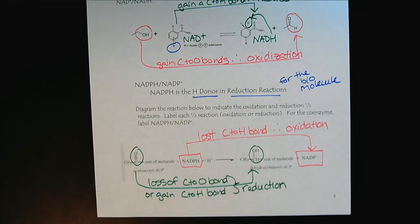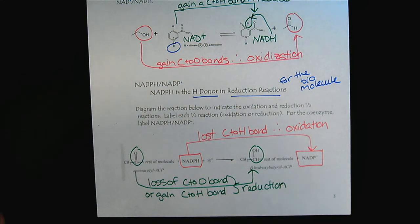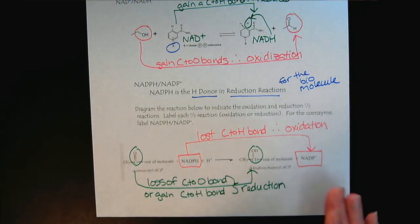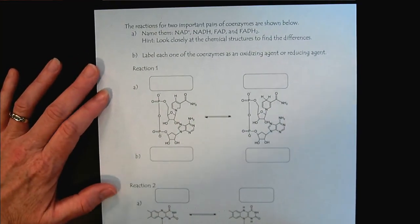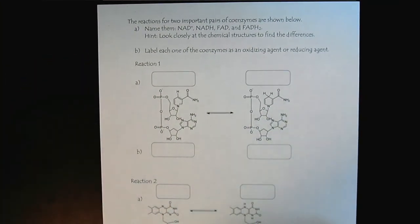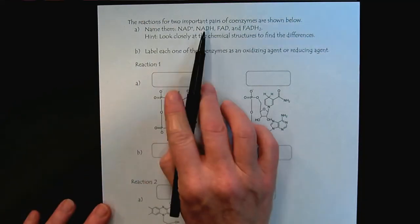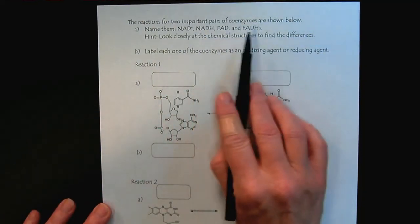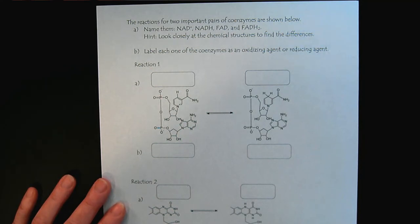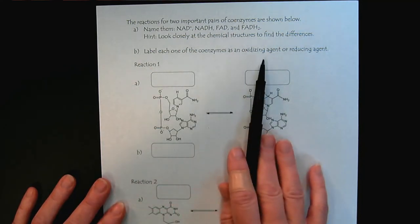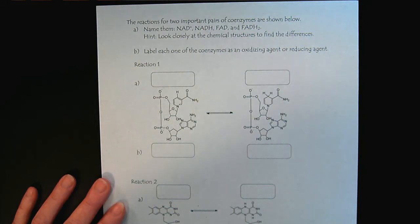So there are the three main coenzymes. Now to wrap this up: on a fresh sheet of paper, let's see how well you're doing. Can you distinguish between NAD+, NADH, FAD, and FADH2? Look closely at the chemical structures to find the differences, then label each coenzyme as an oxidizing agent or a reducing agent.